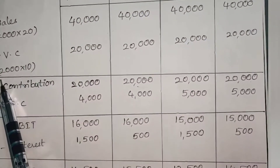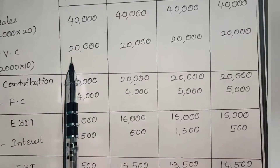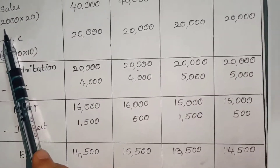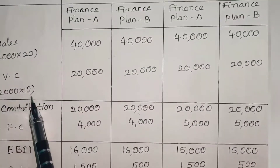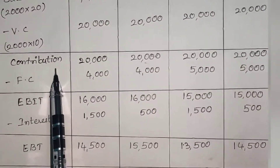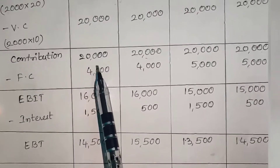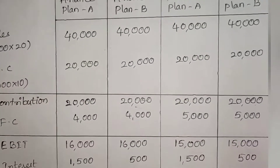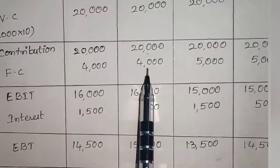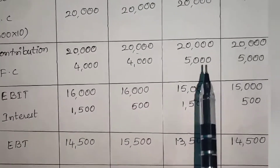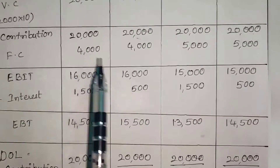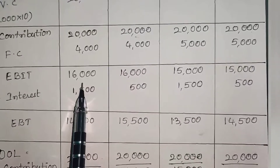Variable cost: 2000 units multiplied by ₹10 per unit gives ₹20,000. Fixed cost in situation 1 is ₹4,000 and in situation 2 is ₹5,000. Deducting fixed cost from contribution gives us EBIT.